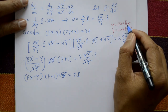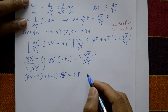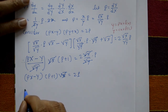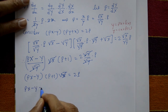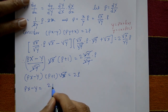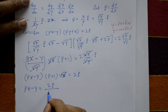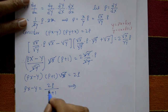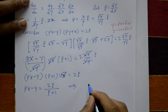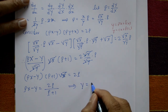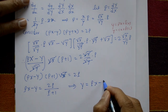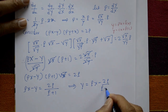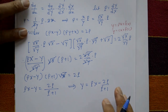To convert to Clairaut general form Y = PX + f(P), interchange left and right hand sides: Y = PX - 2P/(P + 1). This is the Clairaut form of the equation.